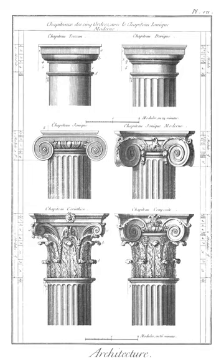Cippus (plural: cippi): a low, round or rectangular pedestal set up by the Romans for military purposes such as a milestone or a boundary post. The inscriptions on some cippi in the British Museum show that they were occasionally used as funeral memorials.